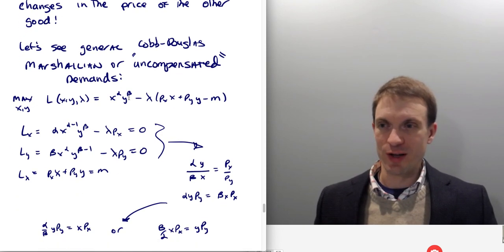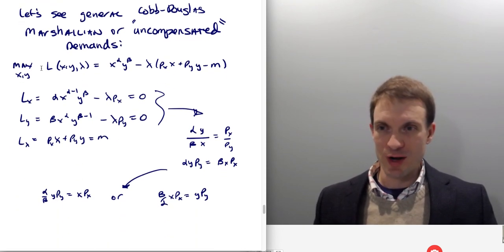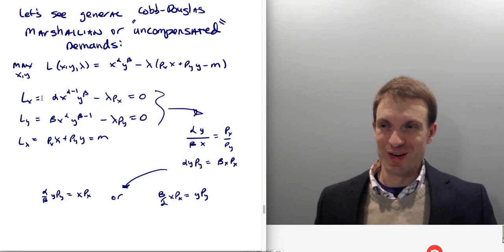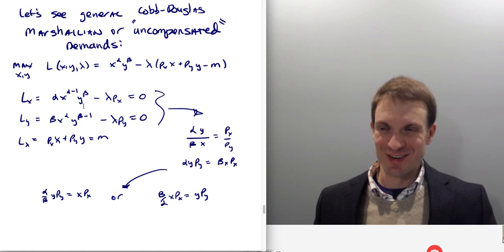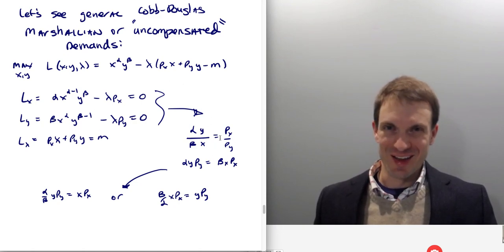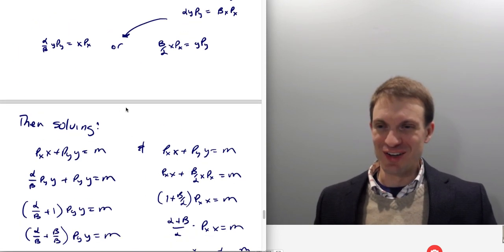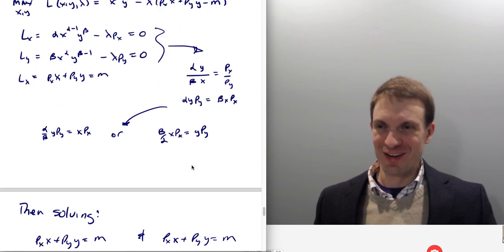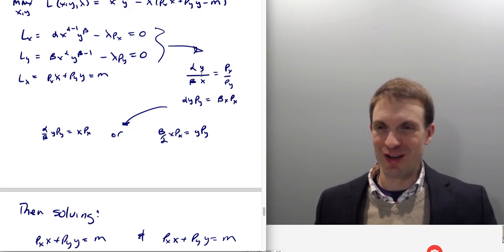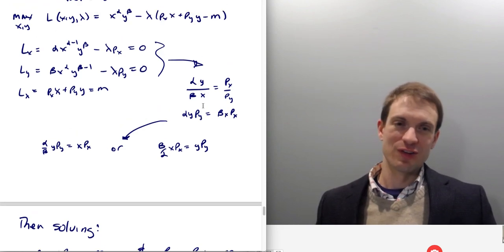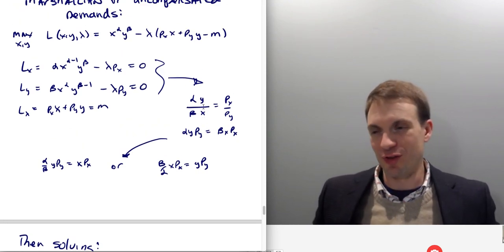So we'll find our Marshallian or uncompensated demands. So here would be our generic Lagrangian for Cobb-Douglas. Here'd be our generic partial derivatives. Here's our generic tangency condition. Here's our generic substitution into the budget constraint. So our generic tangency condition. What have I done here? I shouldn't go over this. I can't go over this fast.